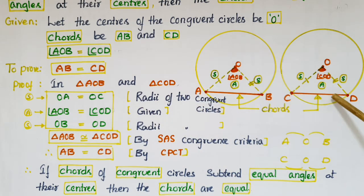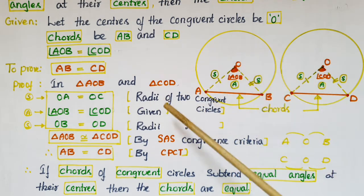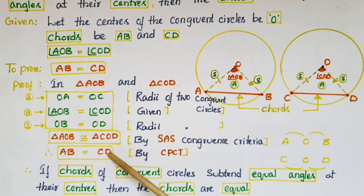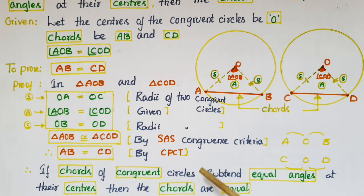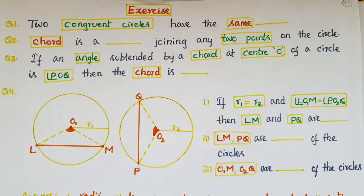Therefore AB is equal to CD, because these are corresponding parts of the two congruent triangles. So AB and CD, the chords of the two congruent circles, are equal. Hence, if chords of congruent circles subtend equal angles at their centers, then the chords are equal.